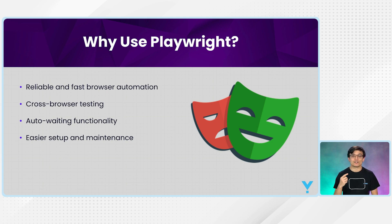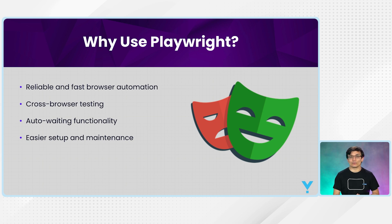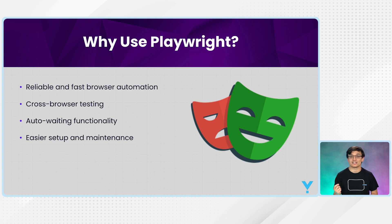For every functionality you want to automate, there is always a method available in Playwright. It is easier to set up and maintain compared to Selenium or Cypress. For parallel testing or multiple browser instances, Playwright is much simpler — in Selenium you would need additional tools like Selenium Grid, but in Playwright no such extra tools are required. The configuration is straightforward.